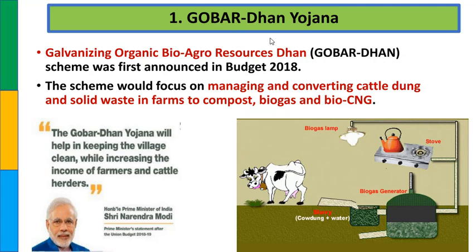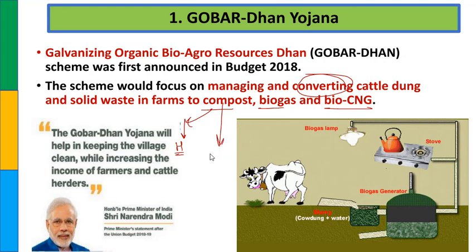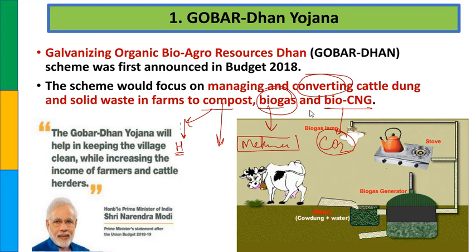इसके अंदर जो भी cattle dung होते हैं, solid waste होते हैं, इनको हम compost, bio gas और bio CNG में convert करते हैं. Compost में agricultural waste, home में सब्जियों के छिलके, rotten vegetables - इन सबको recycle करके soil manure या soil conditioner के रूप में use करते हैं जिससे fertility increase होती है. Bio gas के major components हैं methane और CO2. Bio gas में methane कम होता है और CO2 ज्यादा होती है, इसलिए bio gas comparatively थोड़ा polluting nature का है.